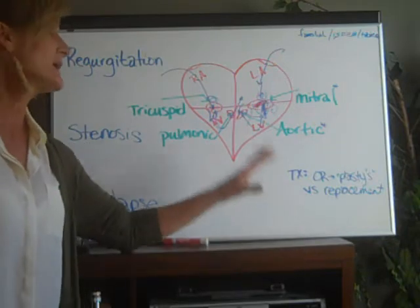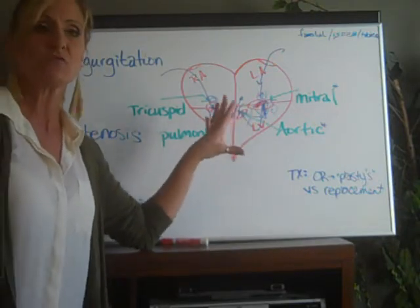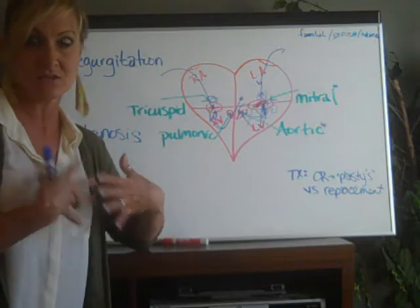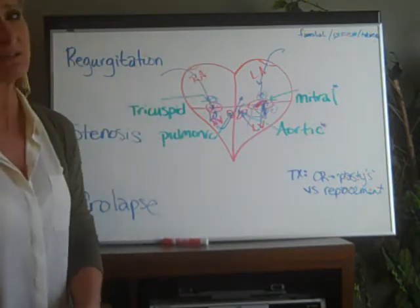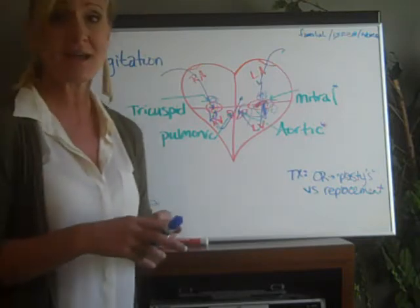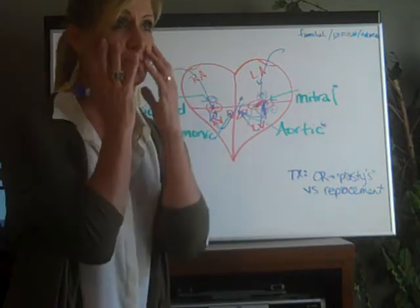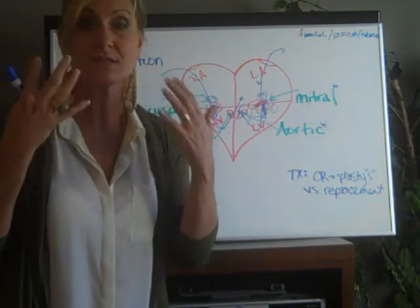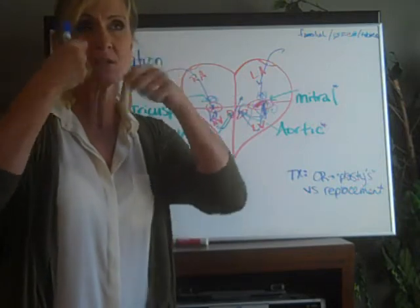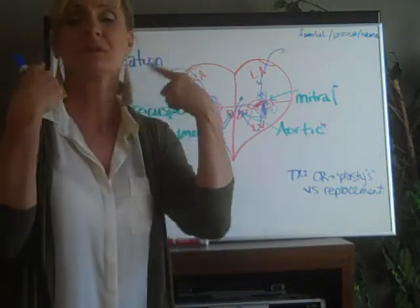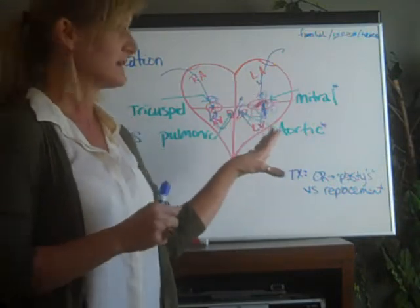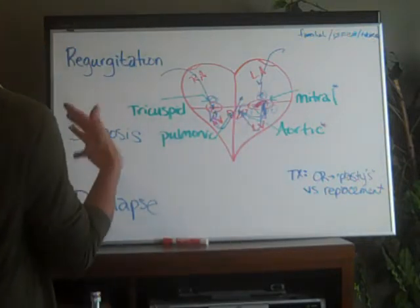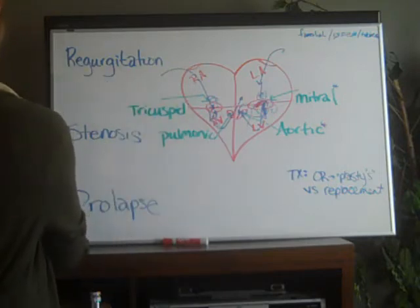You also have to watch out because patients with valve problems are at higher risk for developing endocarditis — infection on those valves or on the inside lining of the heart. Anybody with a valve problem needs to be treated prophylactically in high-risk situations, like any time they go to the dentist. Your gums are very vascular and your mouth has a lot of bacteria; after the dentist stirs that up near the bloodstream, it can get into the heart and lead to infective endocarditis. Teach the patient to take prophylactic antibiotics before going to the dentist.